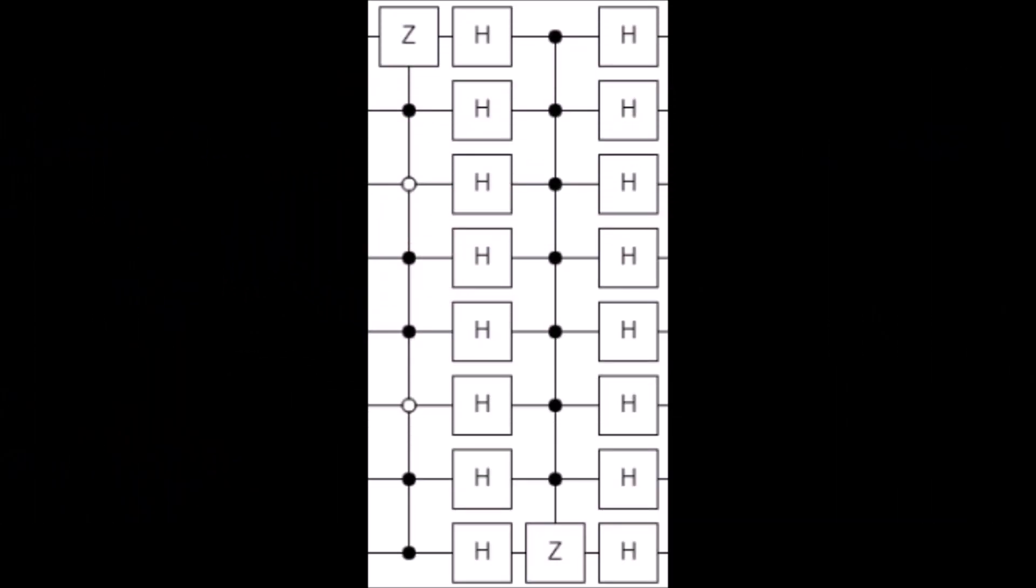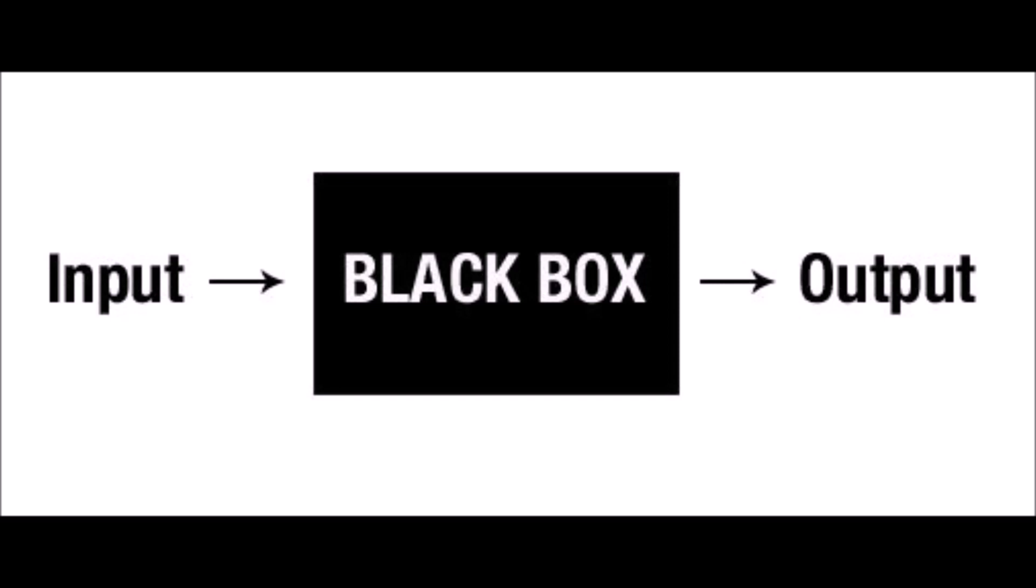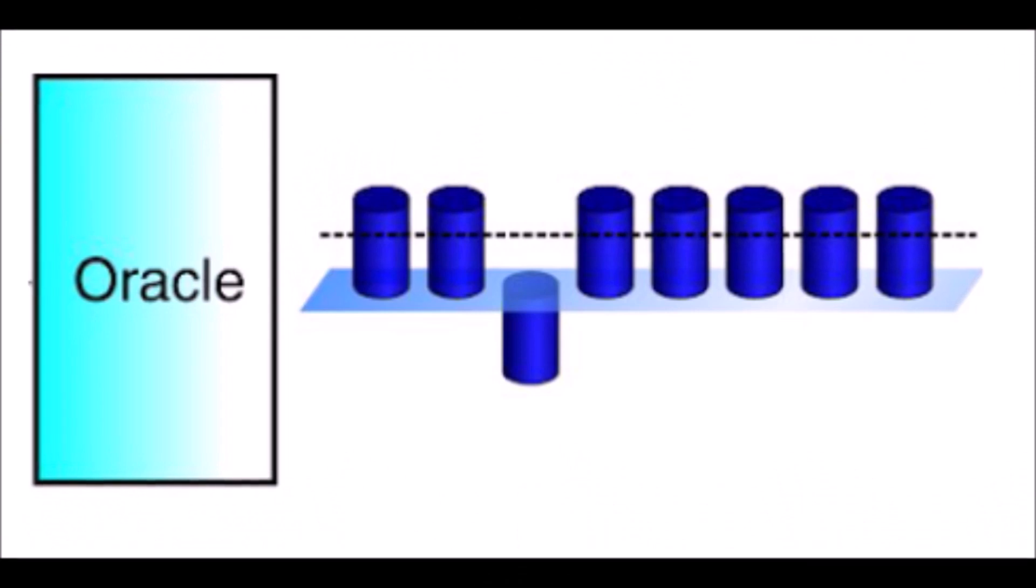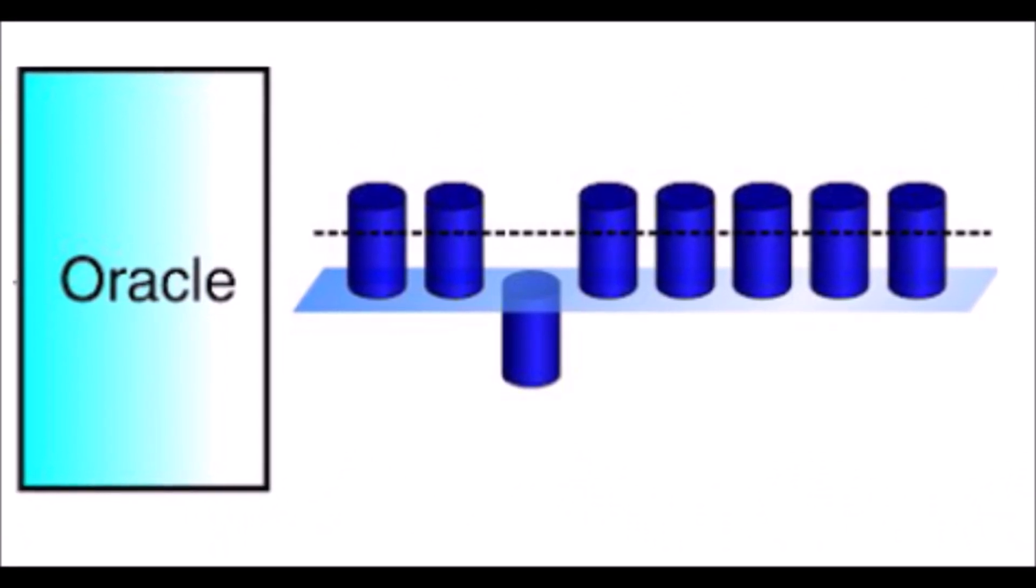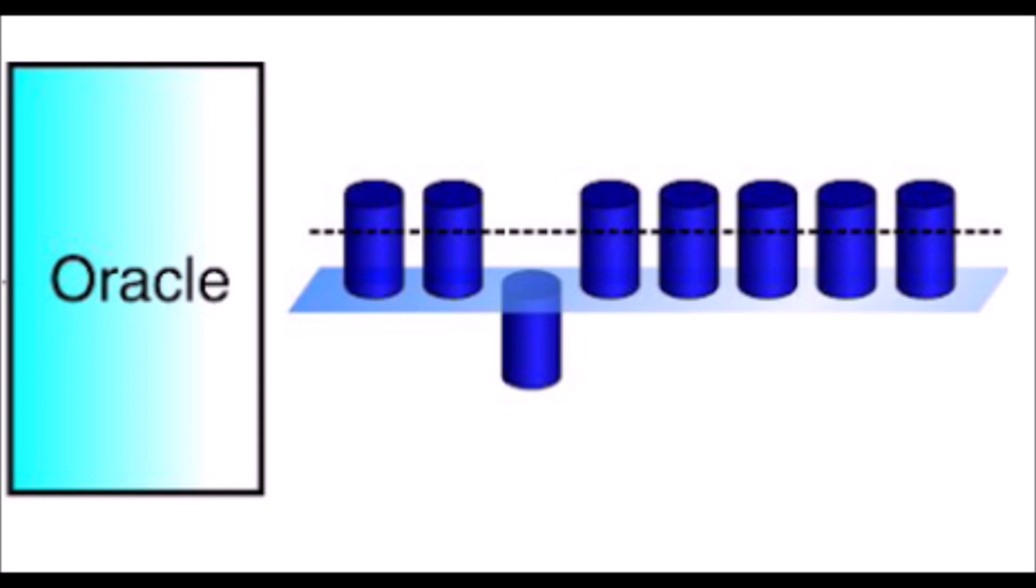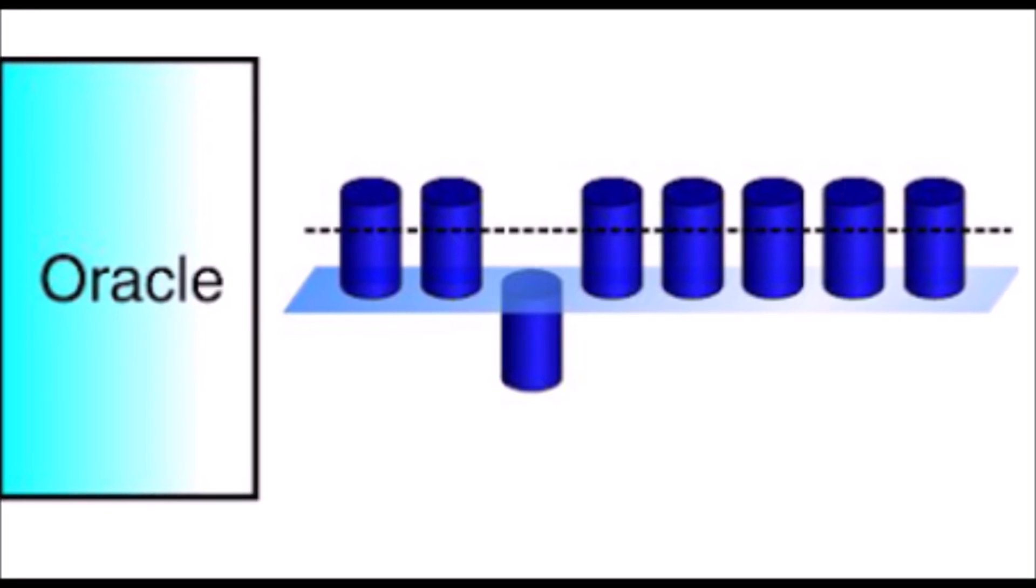Next, we move on to the bulk of the algorithm, referred to as the Grover iteration. The first part of the Grover iteration is the Oracle. The Oracle is basically a black box function that modifies the entry you're looking for depending on its value. This means that if the item is in the correct state, the Oracle will rotate it, but otherwise it'll do nothing. This is referred to as a phase shift and leaves the probabilities of the system the same, but the amplitude is negated.